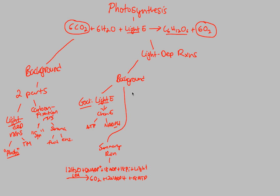There are actually two types of LDRs. Photosynthesis has two parts: light-dependent reactions and carbon fixation reactions. Light-dependent reactions have two sub-parts: linear electron flow and cyclic electron flow. Both are light-dependent reactions. Next, we want to look at photosystems.